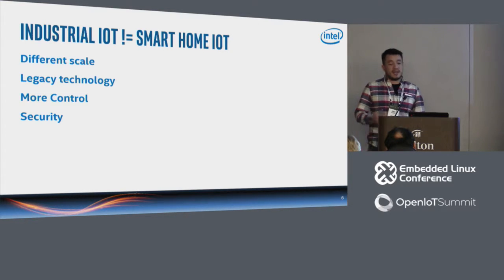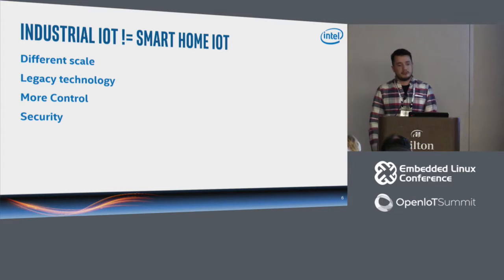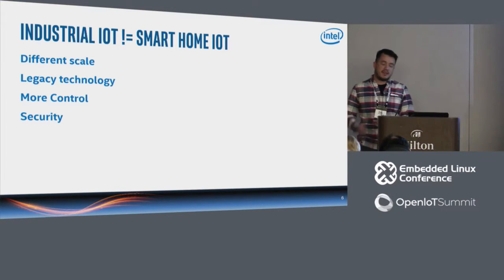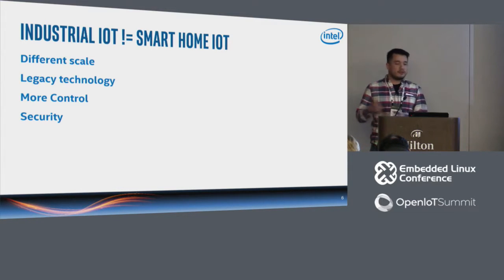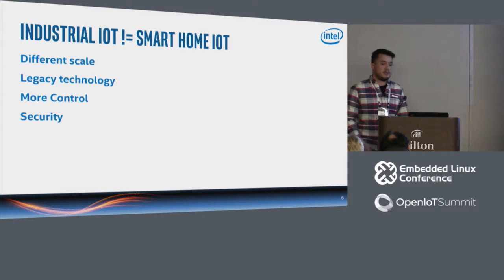With control, you have other requirements like safety and security. Security is another point. In smart home we were sometimes okay with solutions that meant sending your data to the cloud for processing and getting the result back. In factories, sometimes this isn't even possible because of regulations — you have data that must stay within your factory.